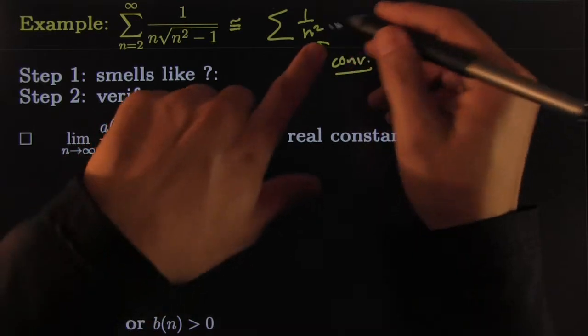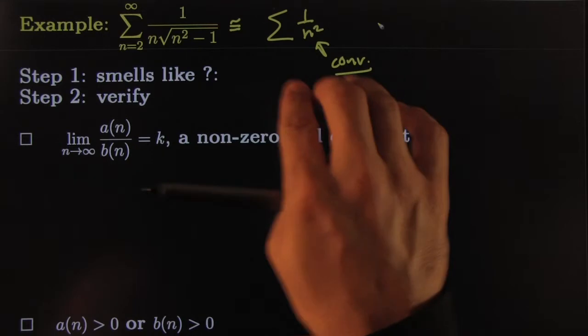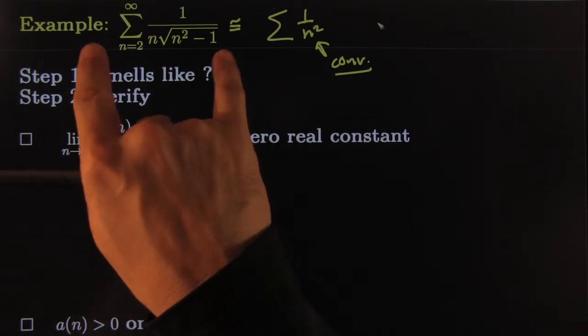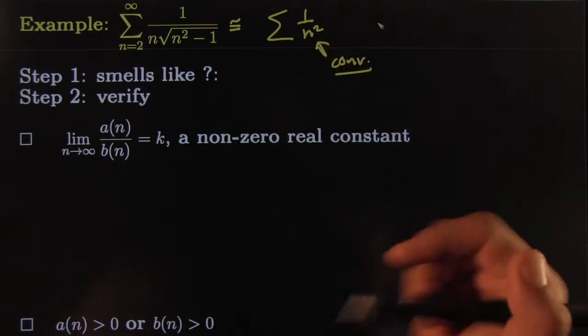Because of so many reasons, for example the integral test, or recognizing it's a p-series. And therefore we can conclude that the original one converges by limit comparison test, comparing it to 1 over n squared.